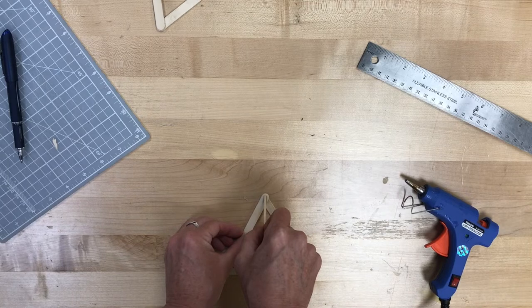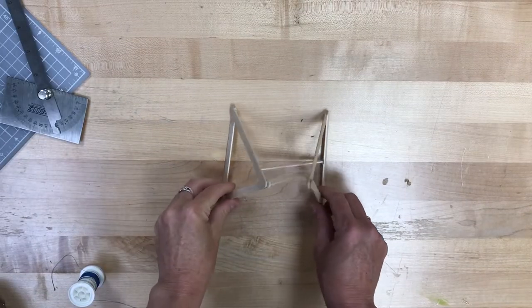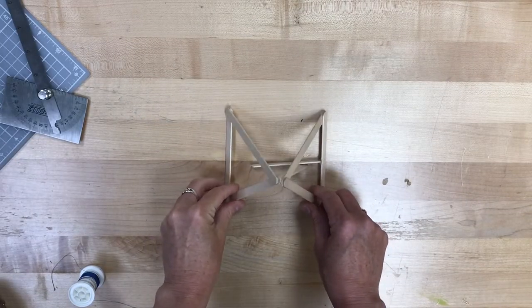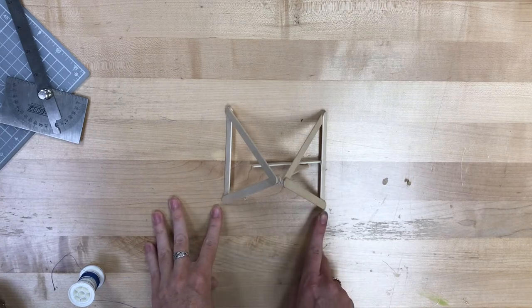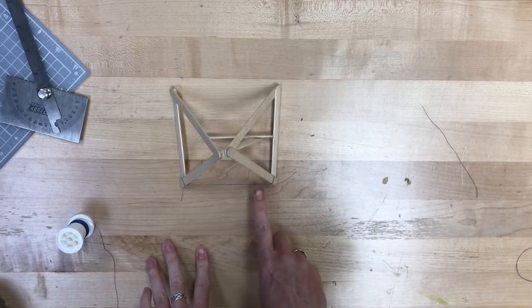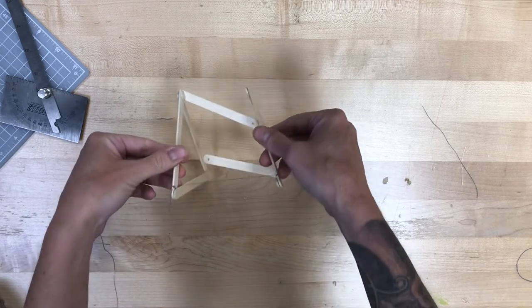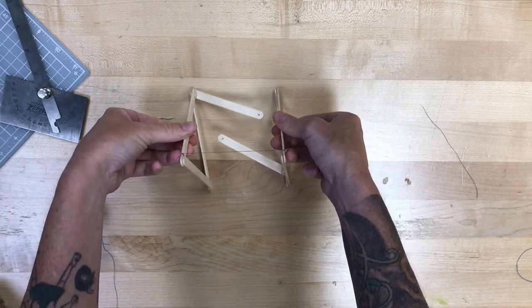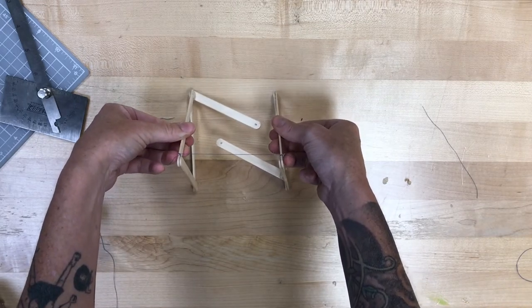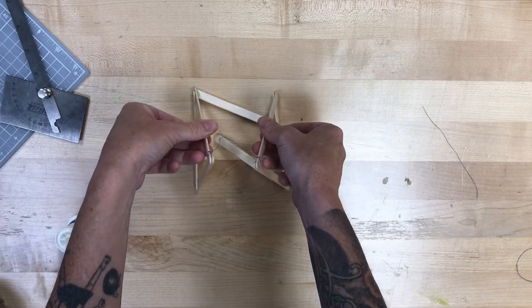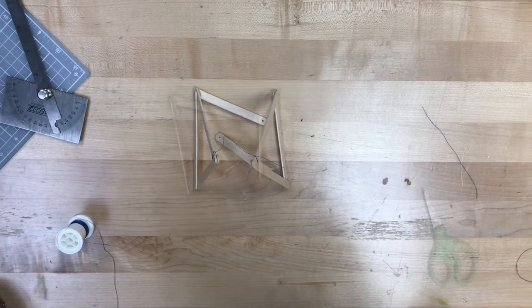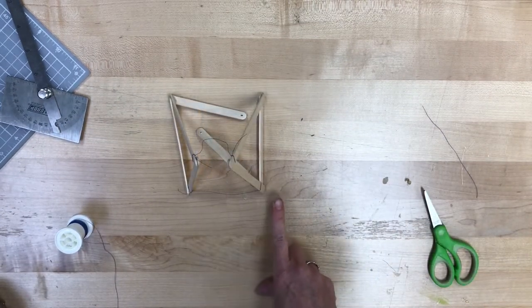Then I'm going to take my two structures and I'm going to face them together with the stick in the middle on the bottom and the stick off the triangle point on the top. And I'm going to tie the two corners together with thread. Then I'm going to rotate it and I'm going to tie the next corner together with thread.